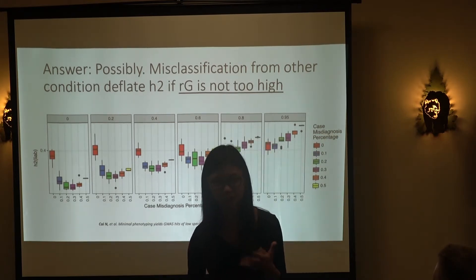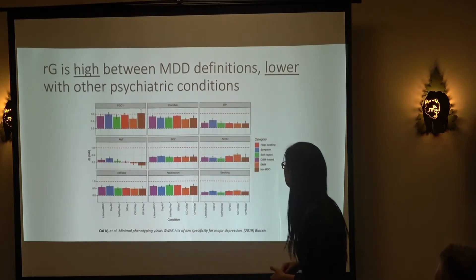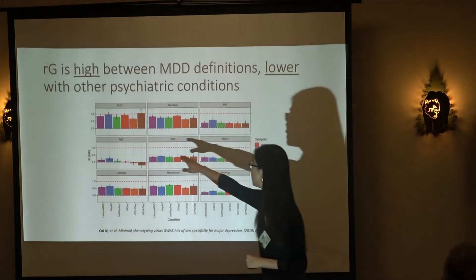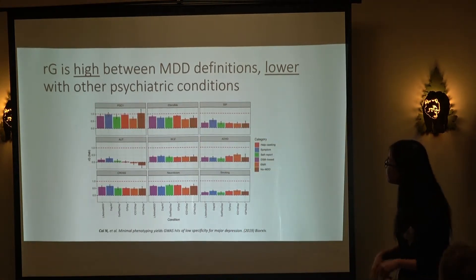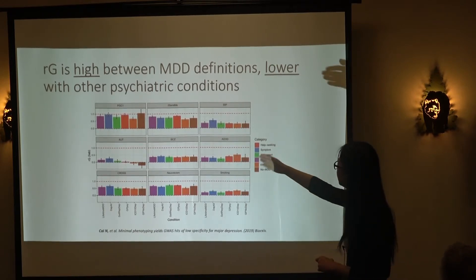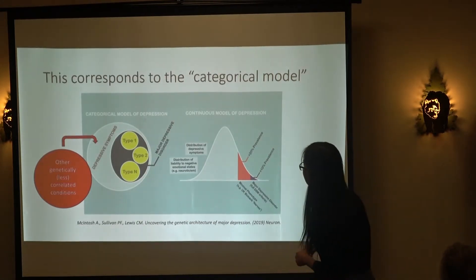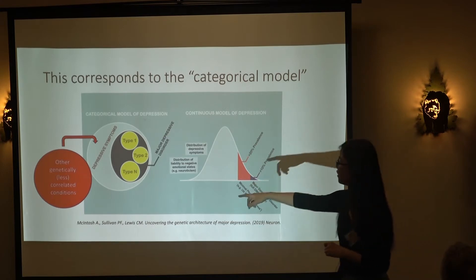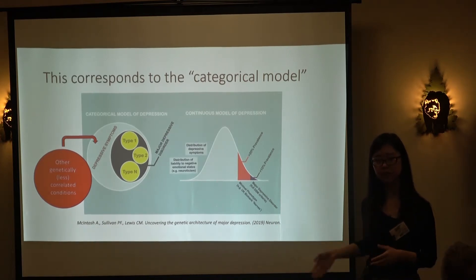Genetic correlations between depression definitions and other psychiatric conditions are usually low and below 60%, while genetic correlations between different definitions of depression are quite high. If it were a categorical model, we'd expect minimal phenotyping definitions to only contain different types of depression. Instead, it's much more likely that misclassifications from other psychiatric problems are causing the heritability deflation.